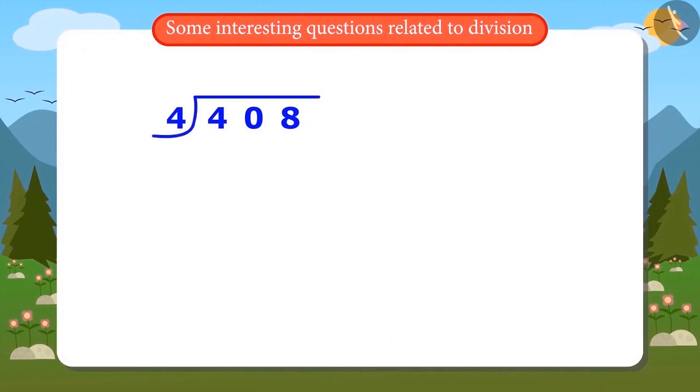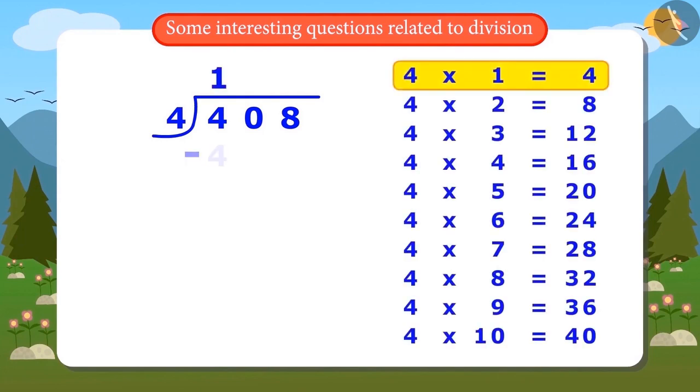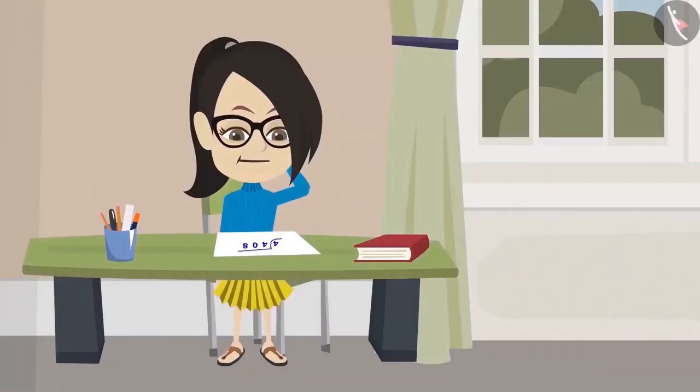Now, we will start dividing. 4 ones are 4. Remaining is 0. Now, write down the next number 0. Hey, this one is also 0. What do I do now? Let me also write down the next number.